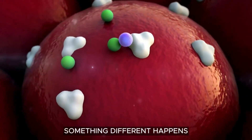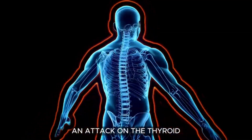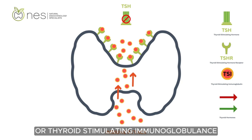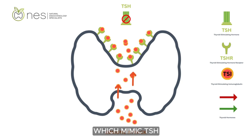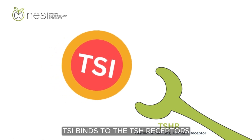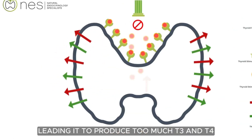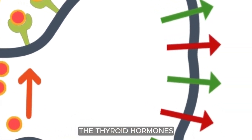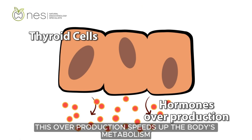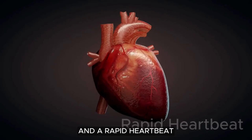But in Graves' disease, something different happens. The immune system mistakenly launches an attack on the thyroid. This triggers the production of TSI, or thyroid-stimulating immunoglobulins, which mimic TSH. TSI binds to the TSH receptors, overstimulating the thyroid, leading it to produce too much T3 and T4, the thyroid hormones. This overproduction speeds up the body's metabolism, causing symptoms like anxiety, weight loss, and a rapid heartbeat.